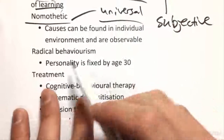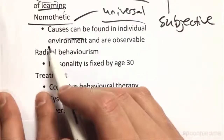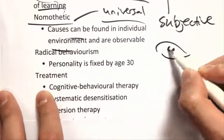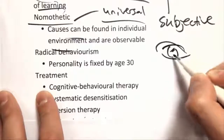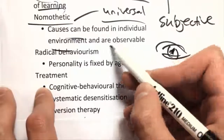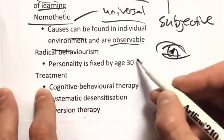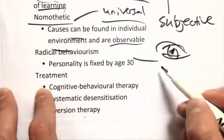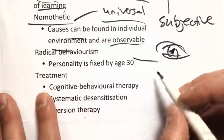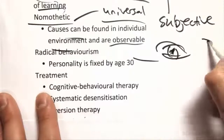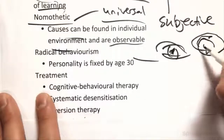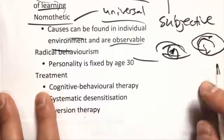The causes of behaviour are found in the individual's environment, and you can observe them — that's the big one, it's all observable. In Radical Behaviourism you don't look at anything internal, but with Cognitive Behaviour Theory you also consider what's in the brain and how you think about things.